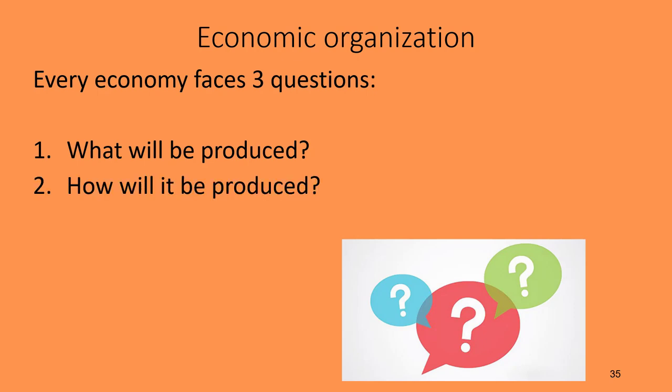The second question every economy must answer is how will it be produced? Once we decide what we're going to make, we decide who is in charge of the production process and how they'll produce those items. Third, for whom will it be produced? How do we decide who gets these particular items — through price and market organization, or through a government or central planners deciding who gets what?